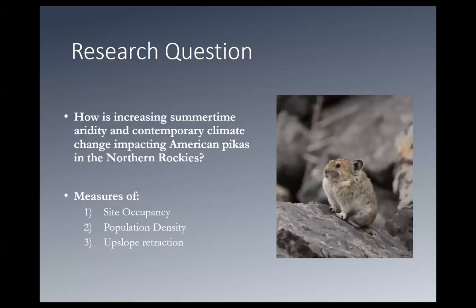The overarching question is: what is the impact of aridity, and other aspects of climate change, on the species here in this ecoregion? To examine this, we have three different measures: site occupancy — whether pikas are there, if they used to be there, or if there's no evidence of occupation in the last several hundred years; population density; and upslope retraction.